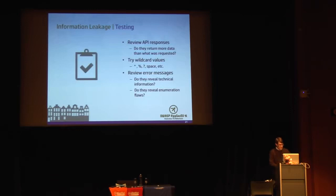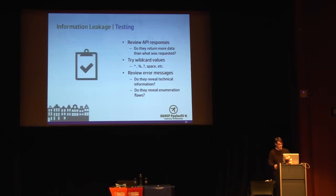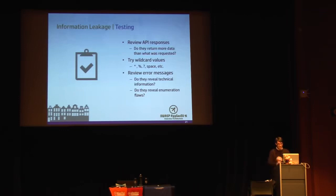In testing for information leakage, review all API responses — do they return just what was requested or do they return more? If I requested information about one user, did it return just that user's information or a list of all users? As you fiddle with various parameters, try not just strings but various wildcard values — typical database wildcards such as star, percent signs, spaces, and blanks — to see if you can trick the API into returning more records than intended. Also review error messages to see if they reveal information that could lead to other types of attacks.